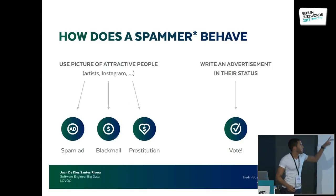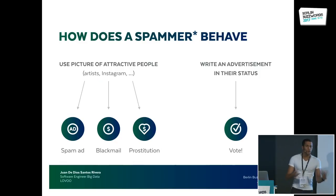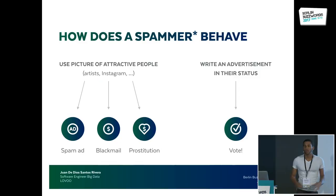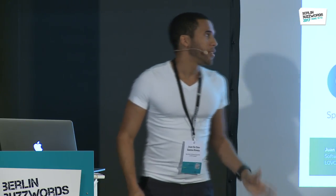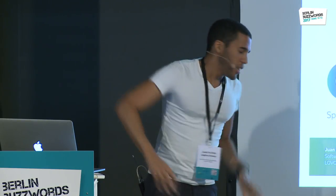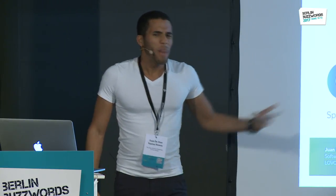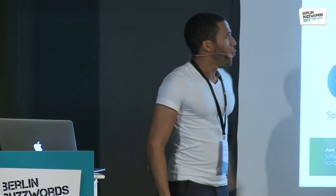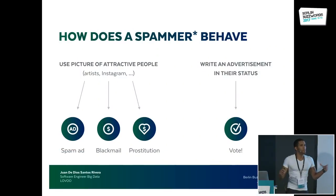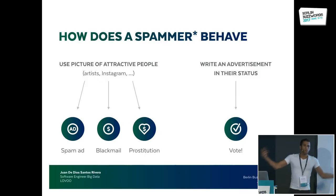How does the spammer behave? Most spammers are actually bots, otherwise it would be easy to catch them. I define spammers into two categories: active and passive. The active spammer tries hard to engage in conversation using pictures of celebrities from Instagram — you'd have no idea how many Brad Pitts and Scarlett Johanssons I've seen. Once you're in the conversation, they spam you with an ad, blackmail, or even prostitution services. The passive spammer just writes a simple advertisement in their status and then votes repeatedly, so when you get the vote notification, you visit the profile and see the message.